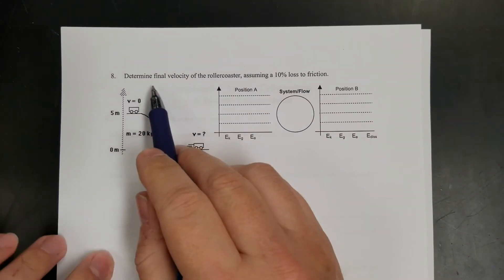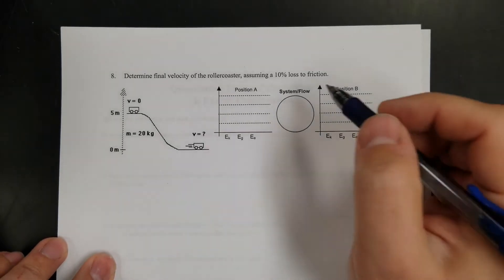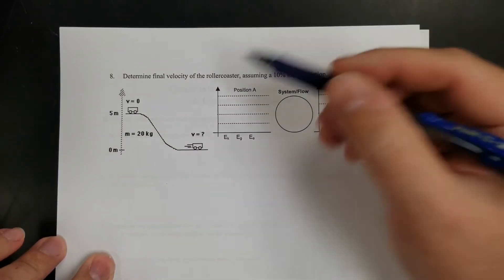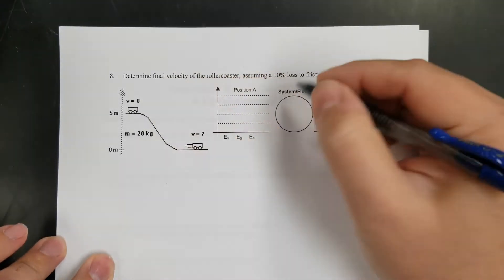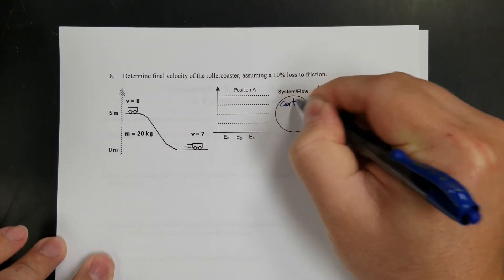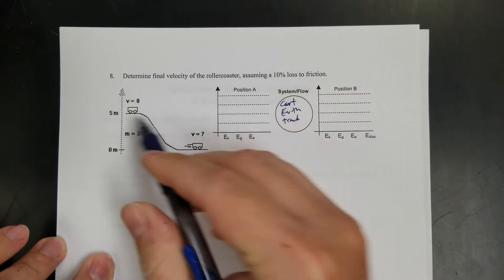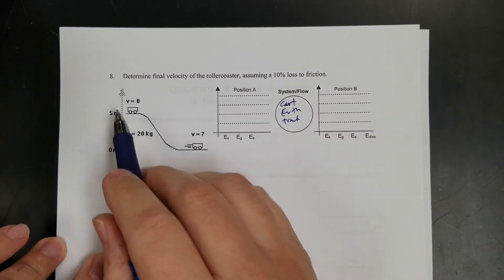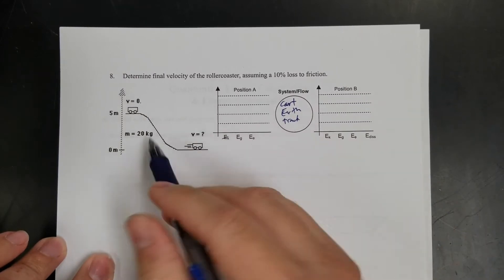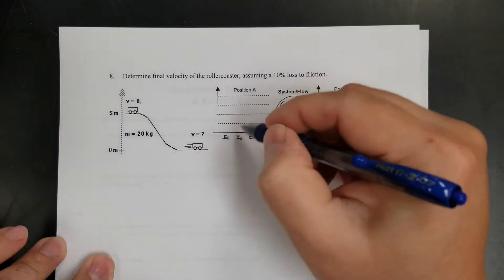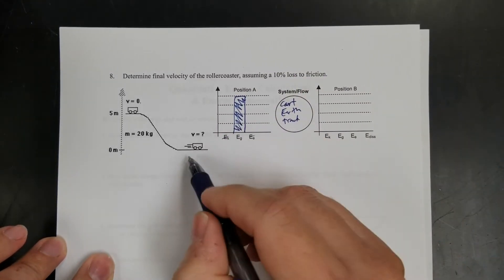All right, last problem. So determine the final velocity of this roller coaster, assuming a 10% loss to friction. Okay, so this one's really skimpy on the words. So let's look at the start. Well, my system, first off, everything's in the system, right? So it's cart, earth, track. That's everything. Okay. So at the start, no velocity, no kinetic. No springs, no elastic. So it's all gravitational.